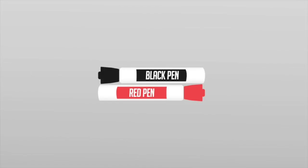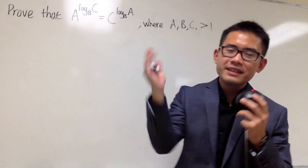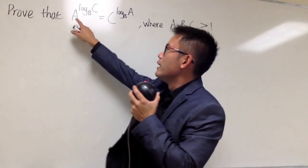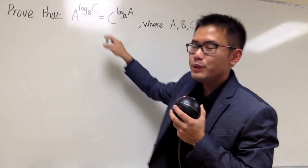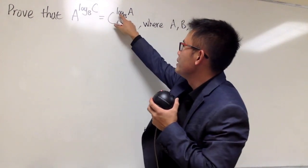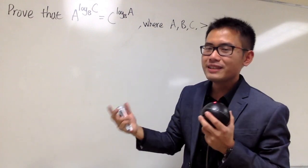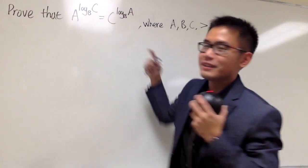Black pen, red pen, yay! Spencer Key, this is for you. I'm going to show you how to prove A to the log base B of C. This power is equal to C to the log base B of A — that power. As we can see, the A and C got switched, that's all.